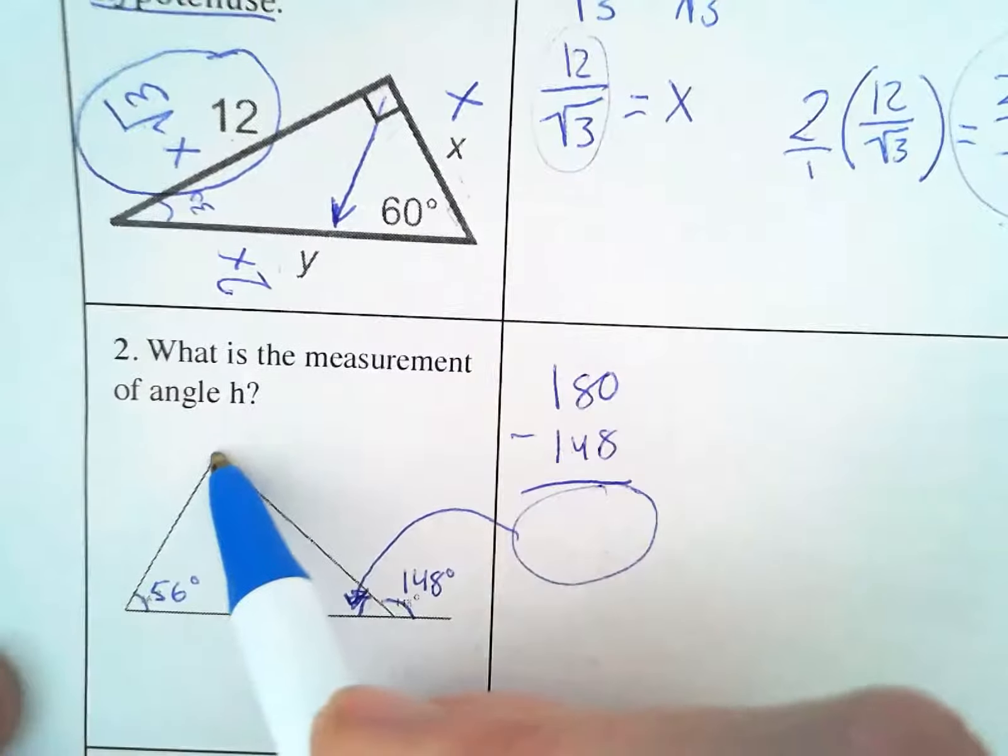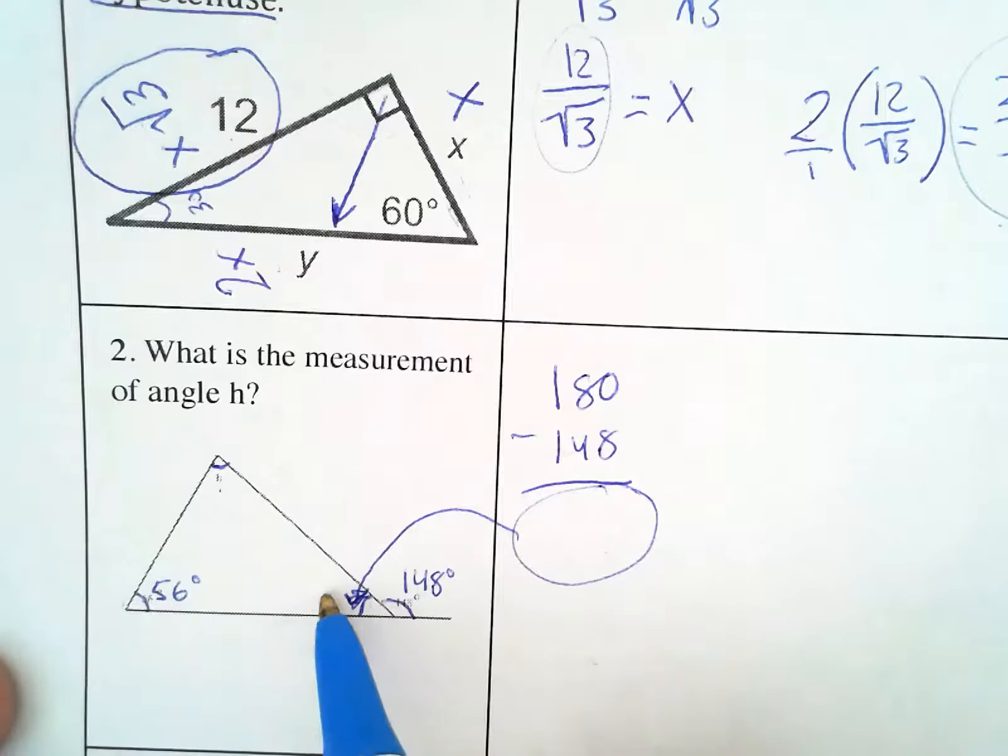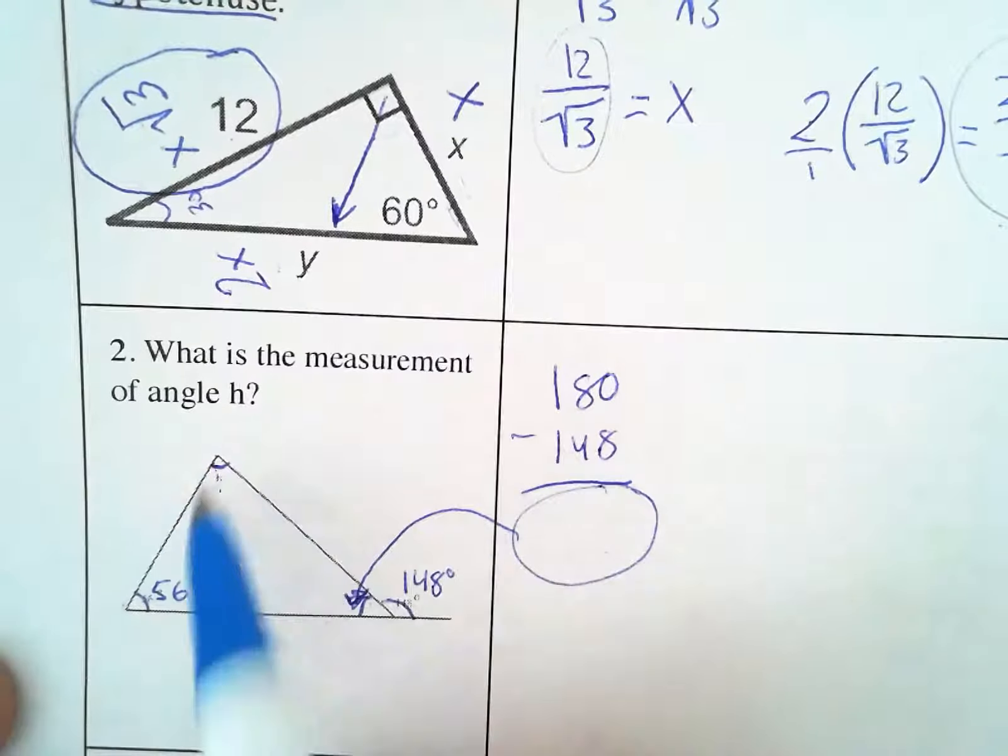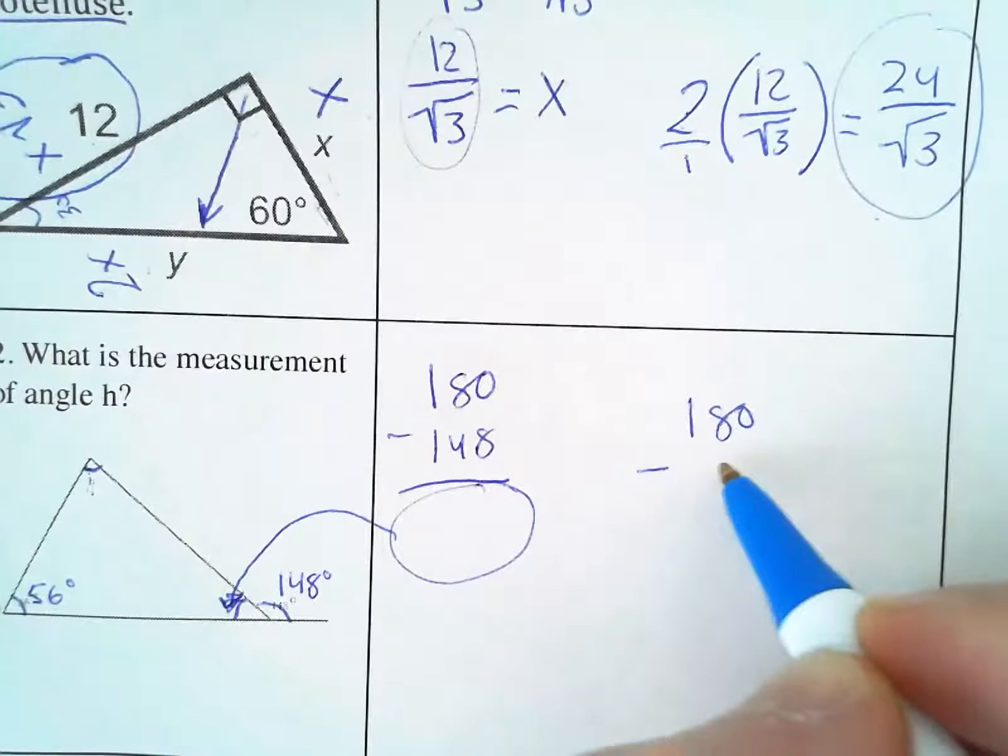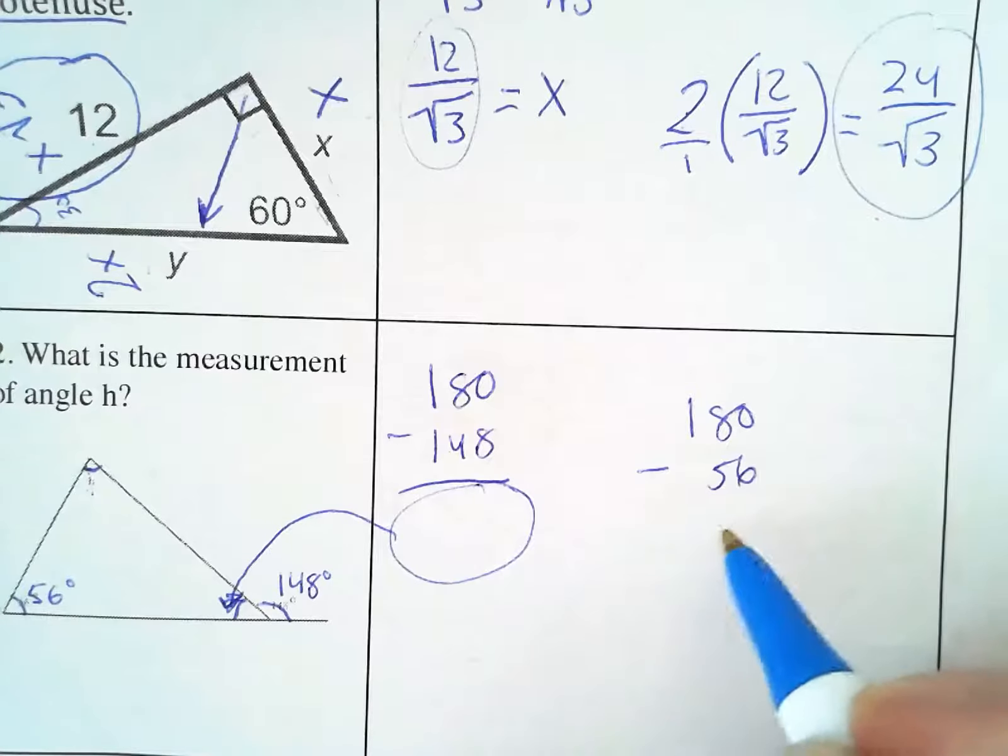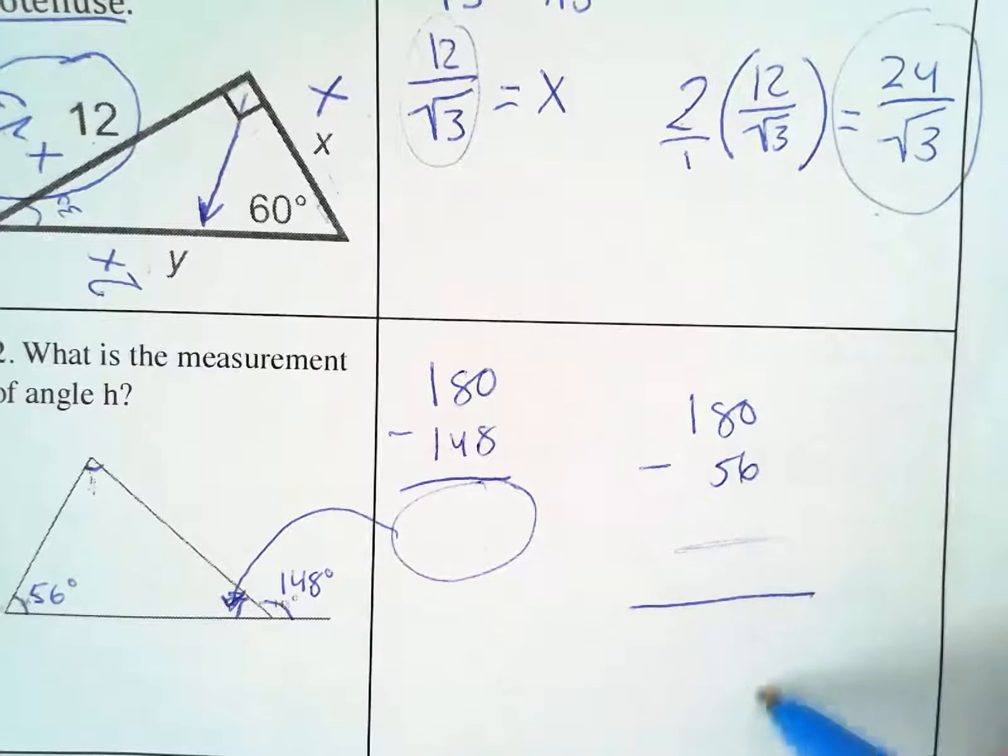then we have to figure out 180 minus 56 minus this number would be H. So for this last part, you would just say 180 minus 56 minus some other number. I don't know what goes there, but some other number. Once you would subtract that, whatever you get here is your answer.